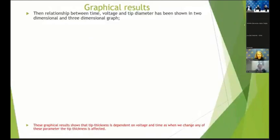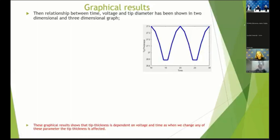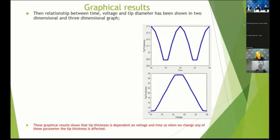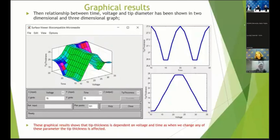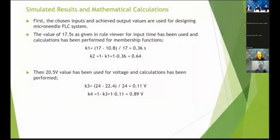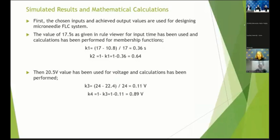We have the graphical results. This is the 2D result between time and tip thickness. This is the result between voltage and tip thickness. And this is the 3D result — because MATLAB can create a 3D image — where we can see time, voltage, and tip thickness all varying together. Then I used Mamdani's model for the verification of my simulation. For the Mamdani model, I used the typical equation to find K1, K2, K3, and K4 for the input voltage of 20.5 and time of 17.5 seconds.